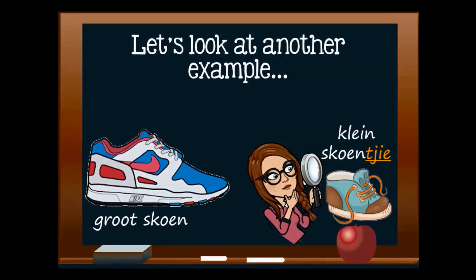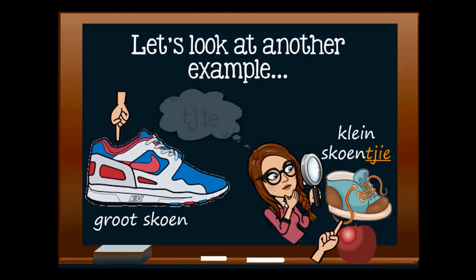Here is our next example. On the one side we have a groot skoen. Skoen is the Afrikaans word for shoe. However on the right we have a small shoe, like the one a baby would wear. This is a skoentjie. And when we look at the part of skoentjie that makes it a verklein woord, it is the T-J-I-E at the end. And this 'tjie' sound makes skoen a skoentjie.